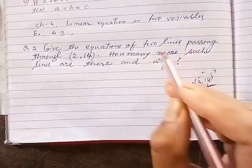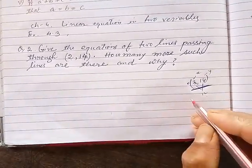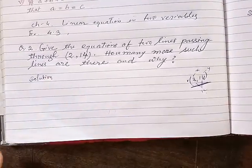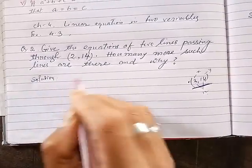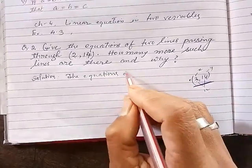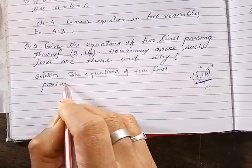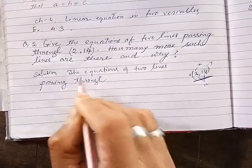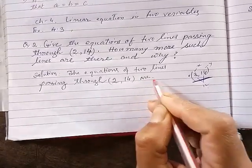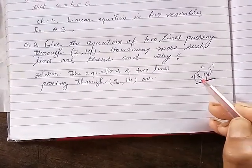But what you have to write — you have to give equations of lines passing through this point. Equations means a relation which is passing through this point, or equations of a line in which this point lies. So easily we can get them. The relation is: the y-coordinate is seven times the x-coordinate.